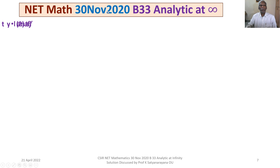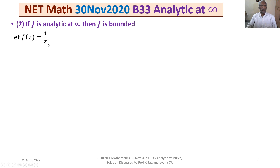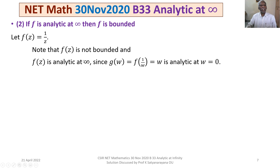We go for option 2. In option 2 it is given: if f is analytic at infinity, then f is bounded. We again give a counter example. Let f(z) = 1/z. It is very clear that f(z) is not bounded. And f(z) is analytic at infinity because g(w) = f(1/w) = w, which is analytic at w = 0. So f(z) = 1/z is analytic at infinity but it is not bounded. Therefore the statement in option 2 is not true.